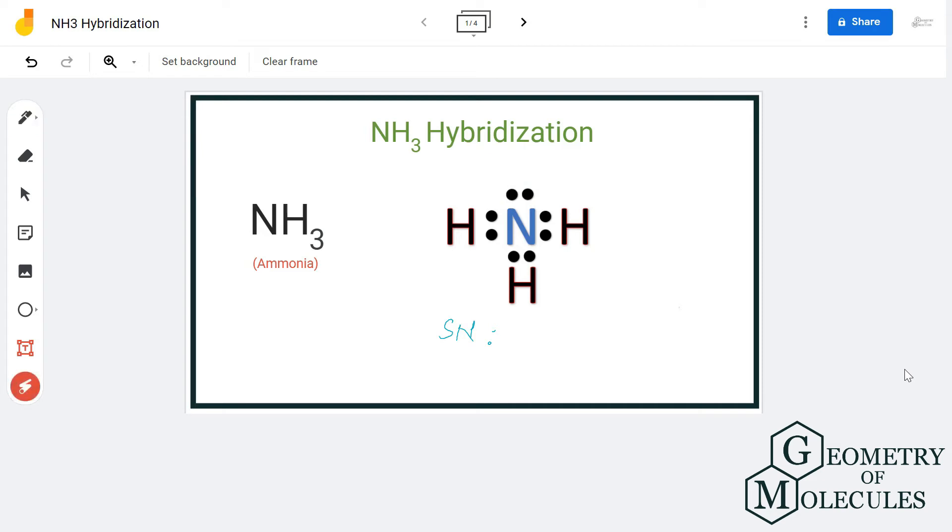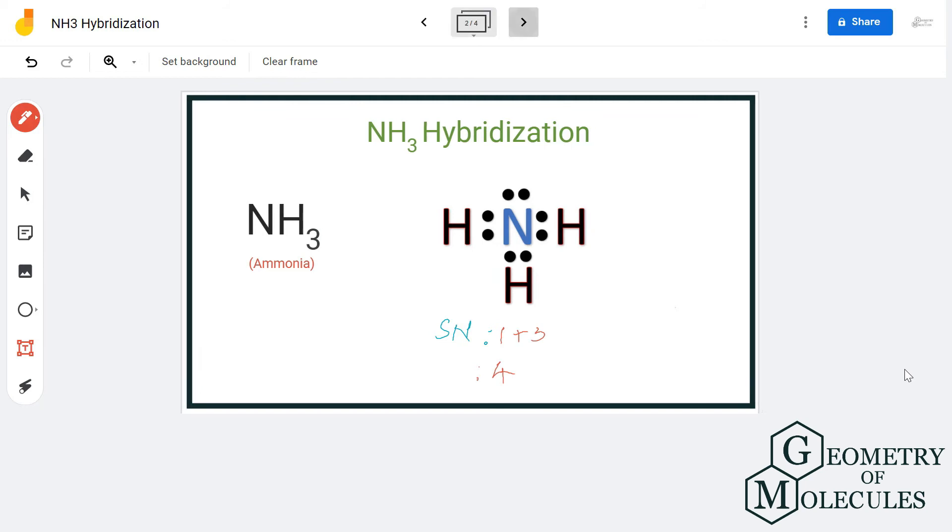There is one lone pair of electrons on the atom plus there are three hydrogen atoms it is forming bonds with, so the steric number for NH3 is 4. And thus, its hybridization is sp3.